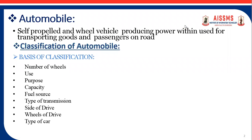Let's talk about automobile first. What is automobile? It is a self-propelled wheel vehicle which produces power on its own for the transportation of goods and passengers on the road. This is the simple definition of automobile — a self-propelled vehicle which produces power on its own in order to transfer goods and passengers on the road.